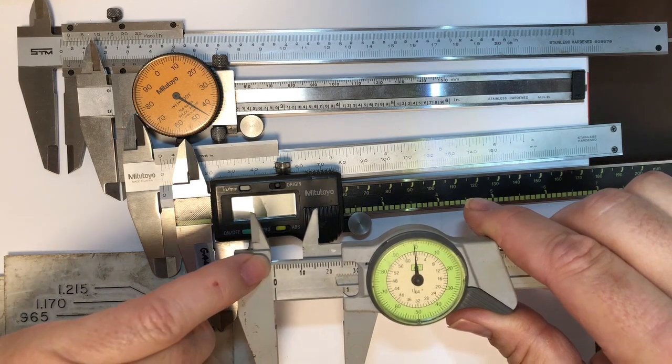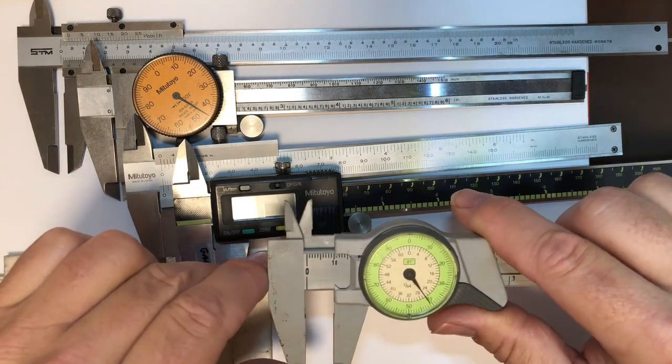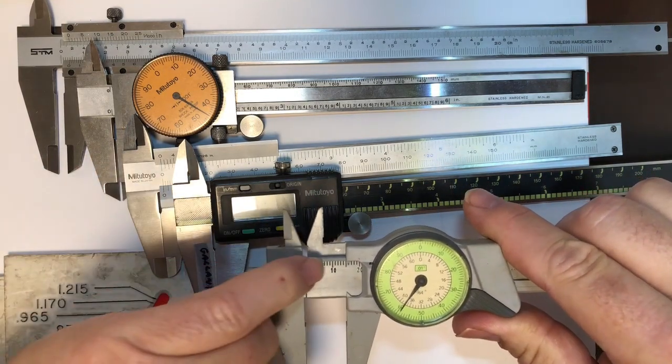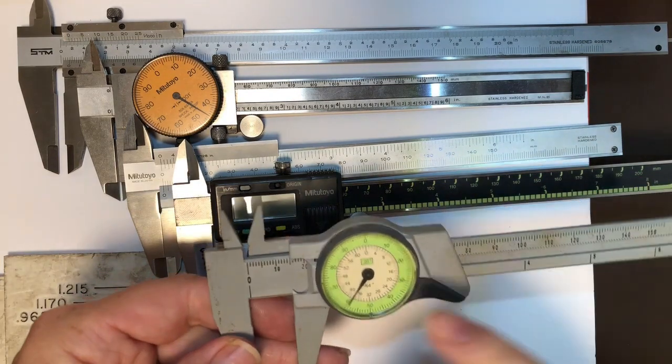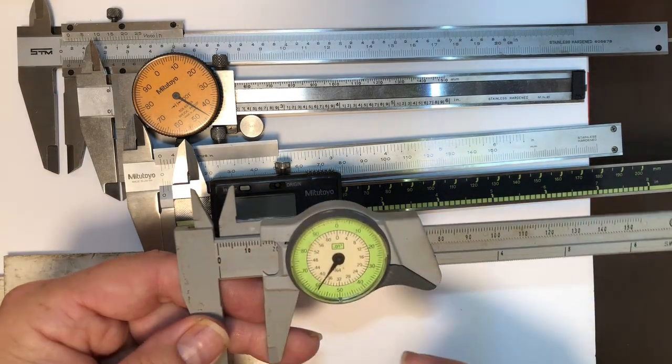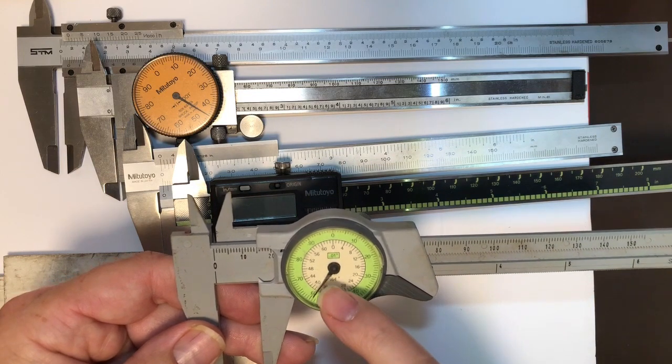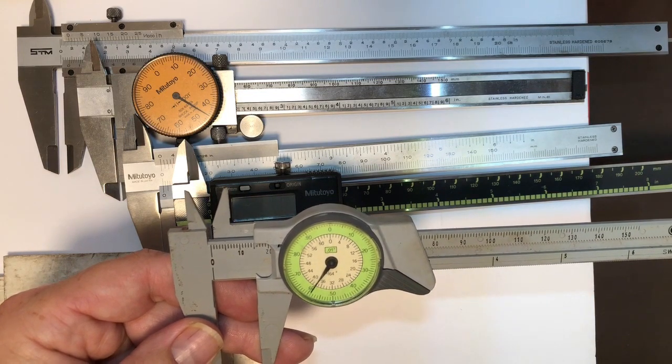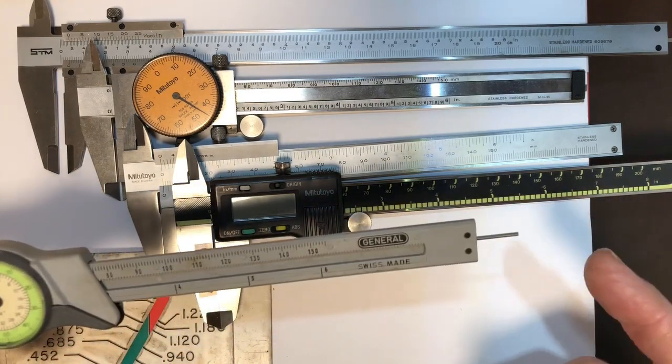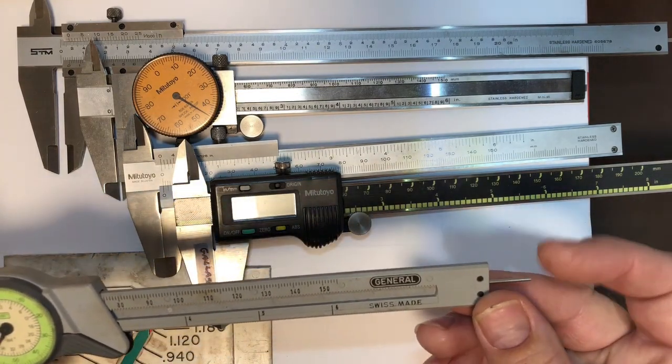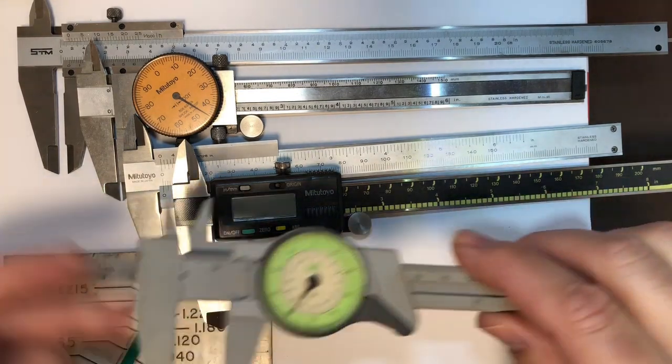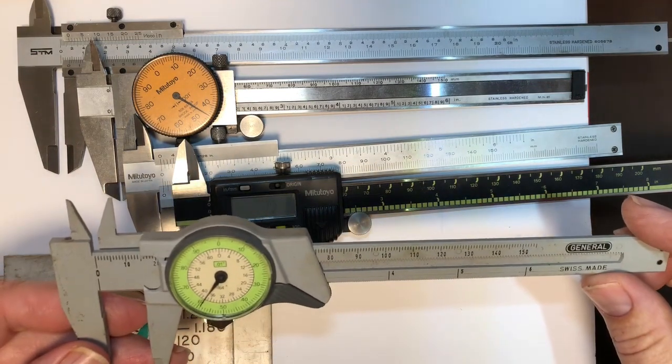So that would be 10 millimeter, this guy here would be 15 millimeter. The inside, which is probably the least likely used, is the 1/64th scale. All depends on what you need. It does have your depth bar on it as well and has all the same functions as a standard vernier.